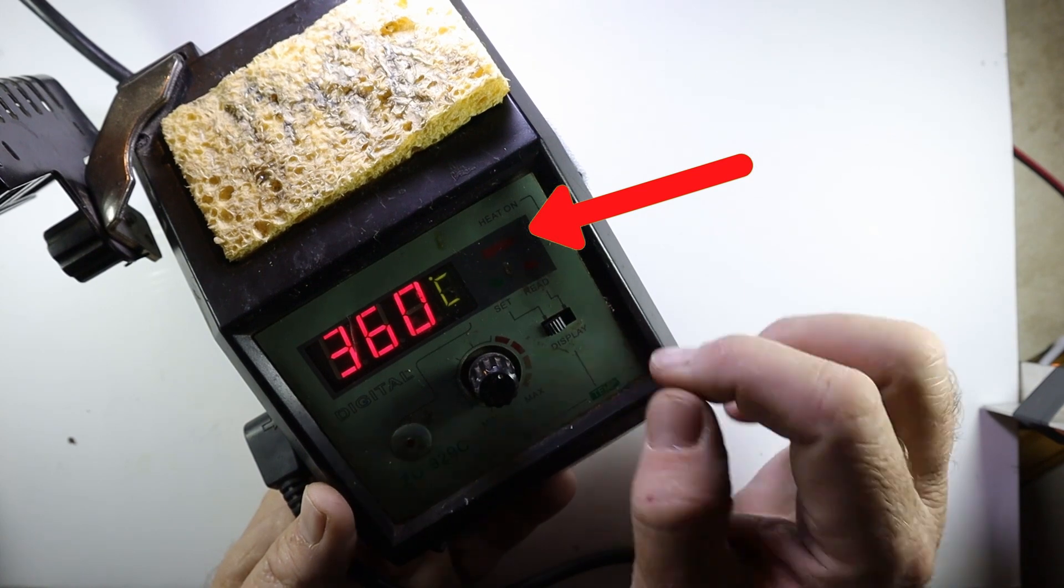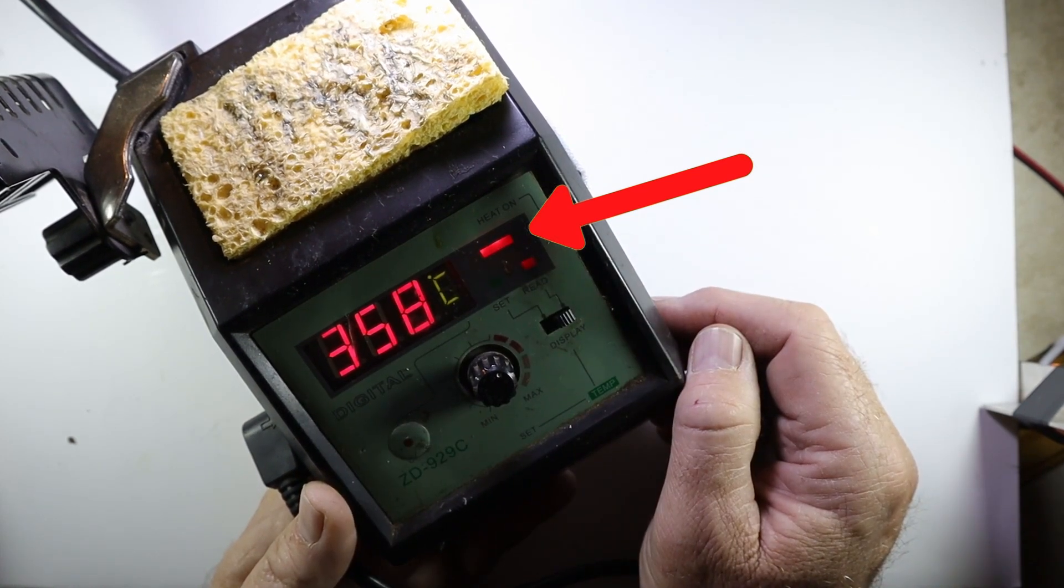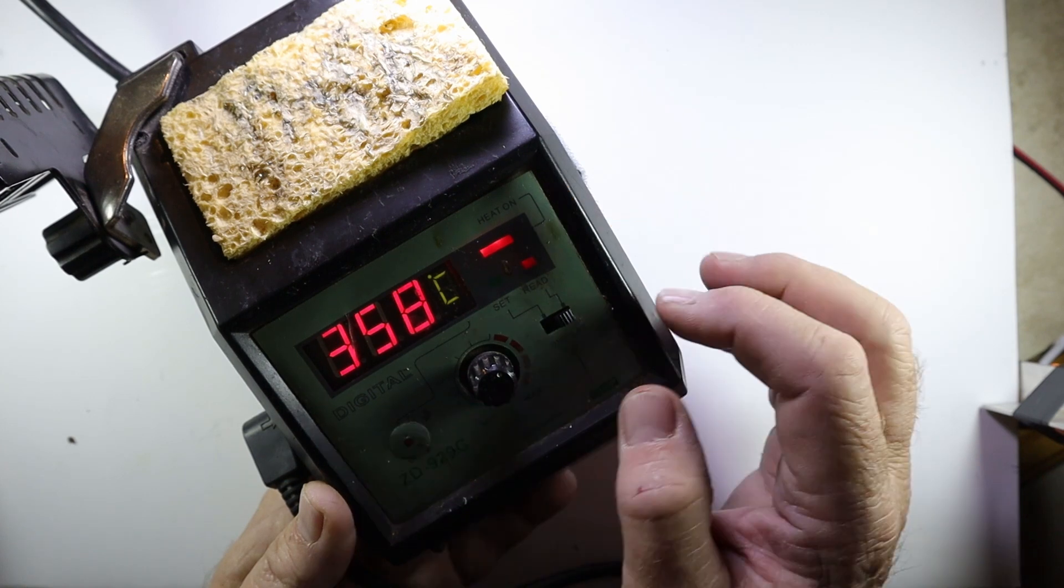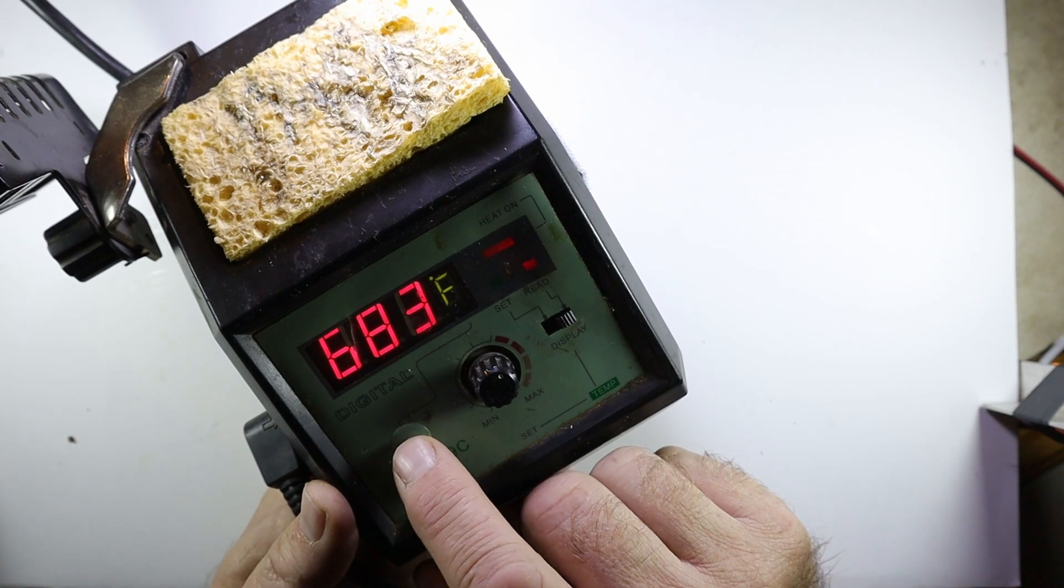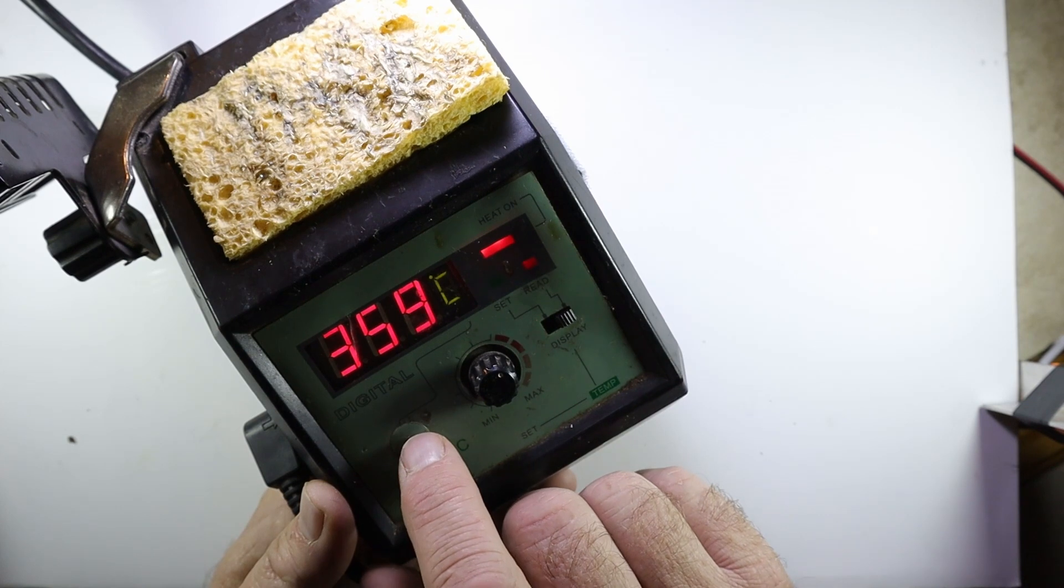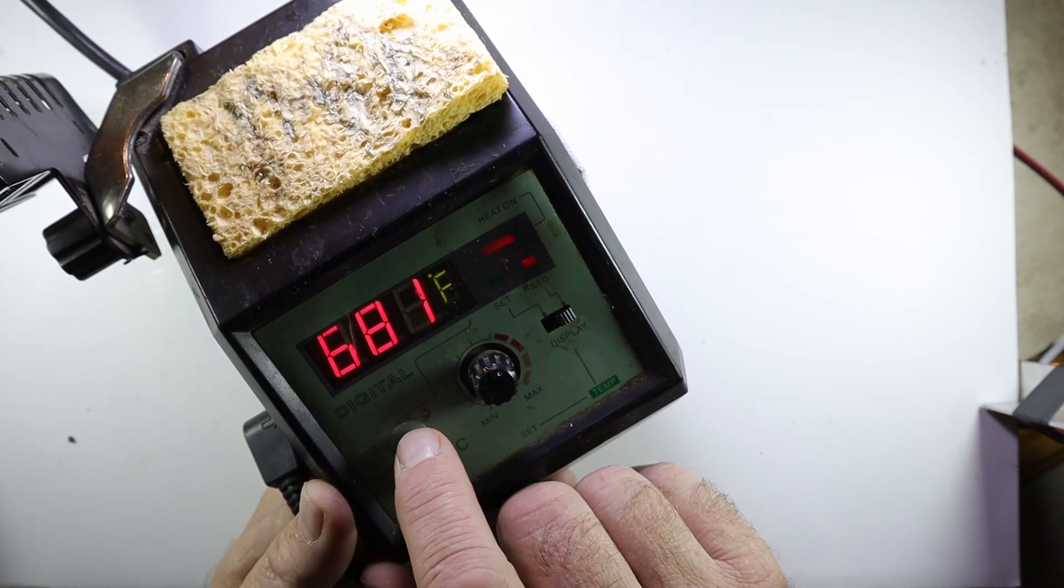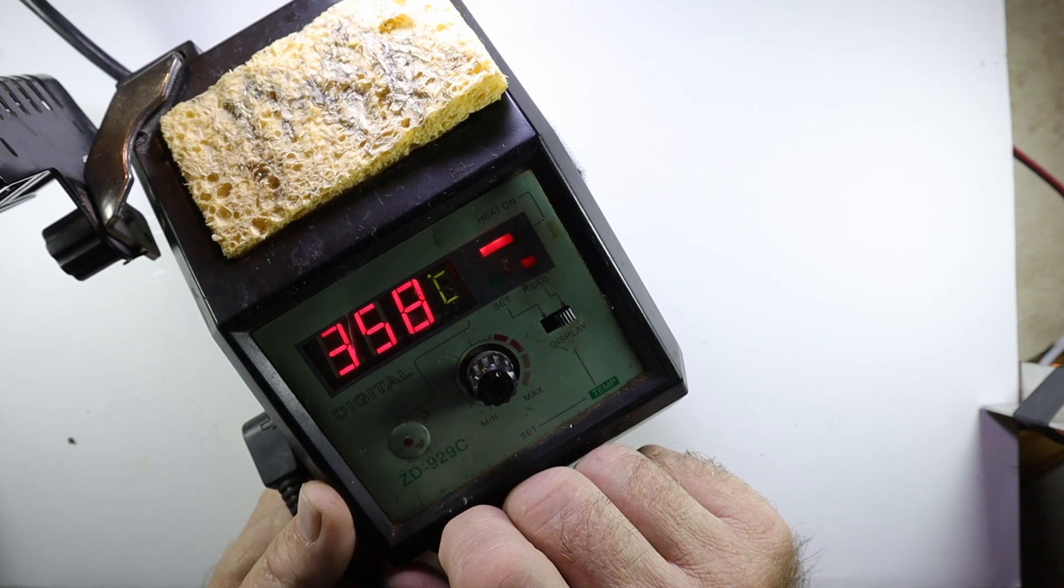There's normally also an indicator light that shows you when power is applied to the iron and when it's busy heating up. You can see it on the right corner there. There's also normally a knob where you can change between degrees Celsius and degrees Fahrenheit, so you can set it to whatever you prefer.